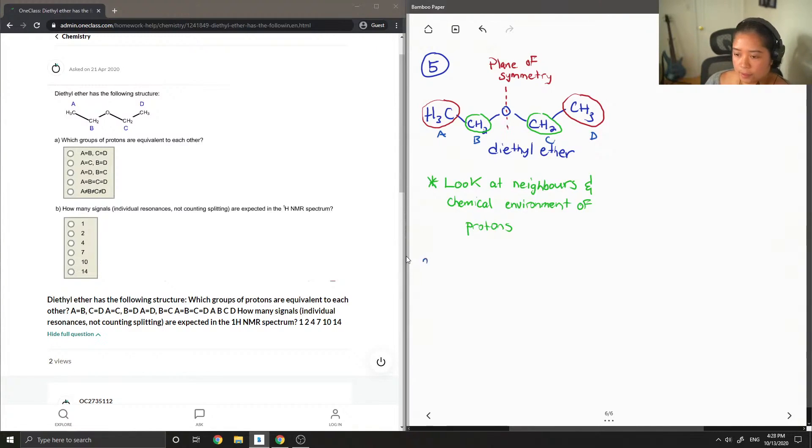And then part A, which H plus are equivalent. In this case, A is equal to D, and B is equal to C. So it's option 3.